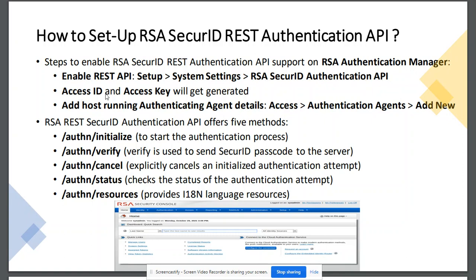Enabling it will generate the access ID and access key, which is basically an API key. The second important thing we need to do is add the host, switch, or router on which we will be implementing the authentication agent — the host that will be sending and processing the REST API requests.